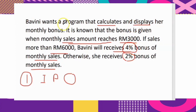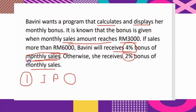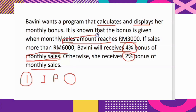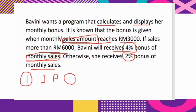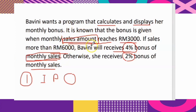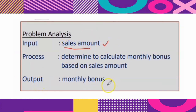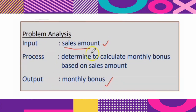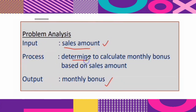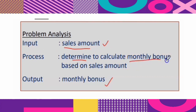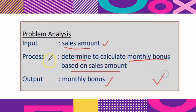Based on this question, the output is monthly bonus. The input is sales amount, because to calculate the monthly bonus you need the sales amount. So: input is sales amount, output is monthly bonus. For the process, you can write: determine and calculate monthly bonus based on sales amount. This completes the IPO.